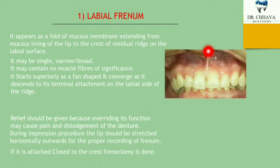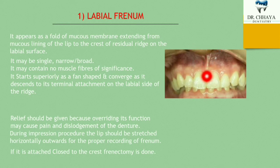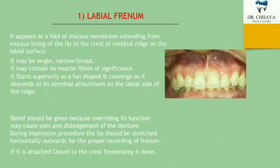The labial phrenum extends from the mucous lining of the lip down to the alveolar ridge in a fan shape. It goes down like a fan — it may be single, narrow, or broad. It may contain no muscle fiber of significance. There is no muscle attachment to the labial phrenum. It starts superiorly as a fan shape and converges as it descends to its terminal attachment on the labial side of the ridge.